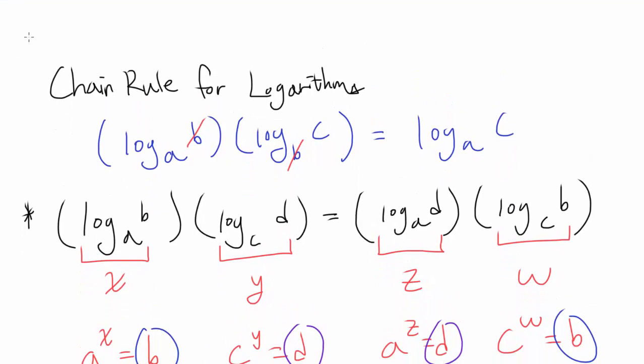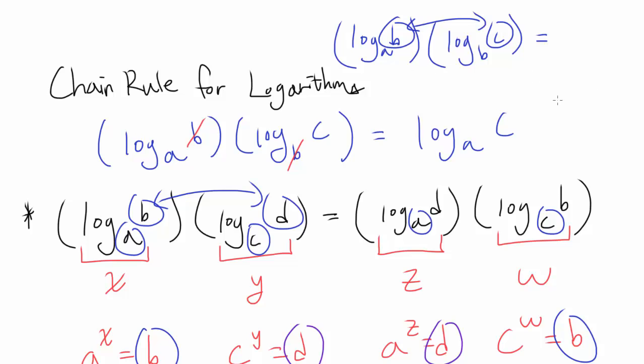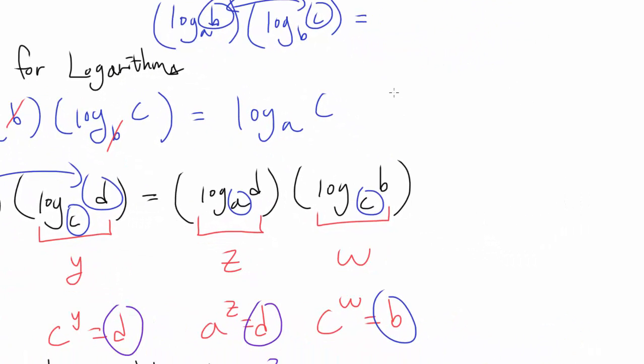Now let's prove the chain rule. We want to prove that log base A of B times log base B of C is log base A of C. We can apply this equation, realizing that A and C are staying the same, but B and D are getting switched around. Instead of log base A of B, you have log base A of D, and instead of log base C of D, you have log base C of B. So we're going to switch this around while keeping the bases constant. That should get you log base A of C times log base B of B. And log base B of B is 1. So this equals log base A of C. We have proven the chain rule for logarithms.